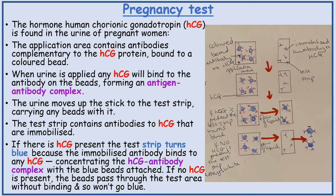The test strip contains antibodies to HCG that are immobilised. If there is HCG present, the test strip turns blue, because the immobilised antibody binds to any HCG, concentrating the HCG-antibody complex with the blue beads attached. If no HCG is present, the beads pass through the test area without binding and so won't go blue.